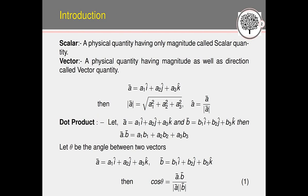What is a scalar quantity? A scalar quantity has only magnitude — for example, mass, density, and distance are scalar quantities. A vector quantity is one that has both magnitude and direction — for example, force, velocity, and acceleration are vector quantities.